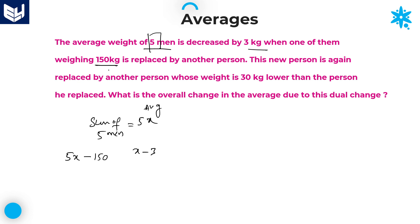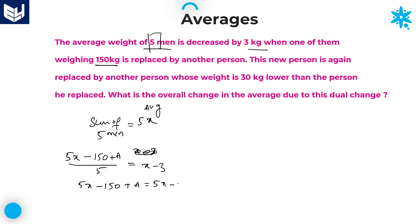As we are replacing this person, this value will reduce by 150, and we don't know the weight of the new person — let's call it A. There is no change in number of persons, that is 5 only, and the average is decreased by 3. So it is clear that 5x minus 150 plus A is equal to 5x minus 15.